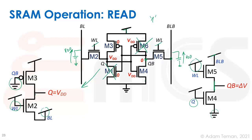On the left side, M2 and M3 are both on, but Q is at VDD, bit line is at VDD, and both NMOS and PMOS sources are at VDD — everybody's happy and nothing changes. On the right side, however, we have a zero stored inside the cell and VDD outside. When the word line is enabled, there is a contention: M4 tries to drive QB down to zero while M5 tries to lift QB up to VDD.